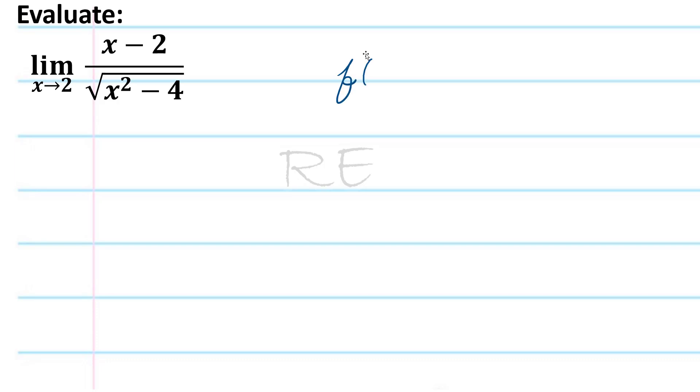First, we need to calculate f of 2 to see if it works. f of 2 will be 2 minus 2 divided by square root 2 squared, which is 4, minus 4.